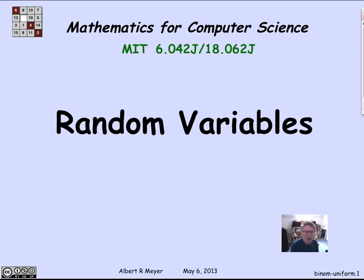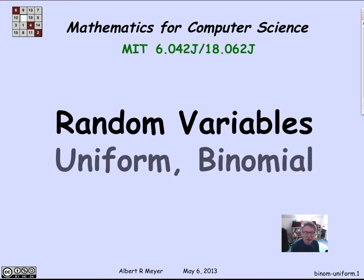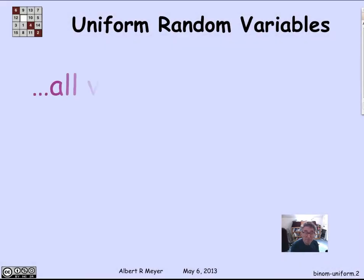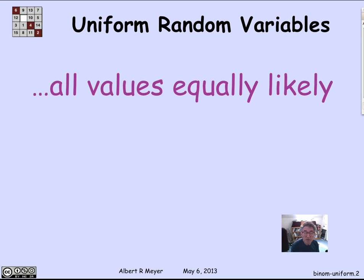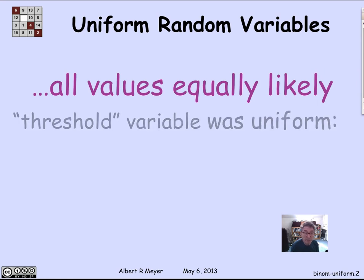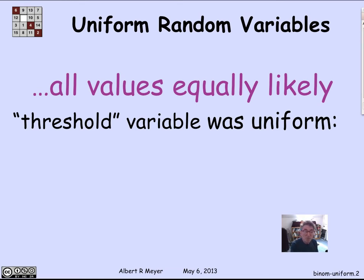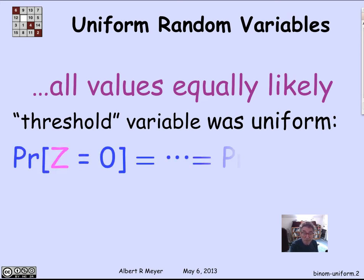Certain kinds of random variables keep coming up. Let's look at two basic examples now: uniform random variables and binomial random variables. Let's begin with uniform, because we've seen those already. A uniform random variable means that all the values it takes, it takes with equal probability. For example, the threshold variable z took all values from 0 to 6 inclusive, each with probability 1/7 — a basic example of a uniform variable.